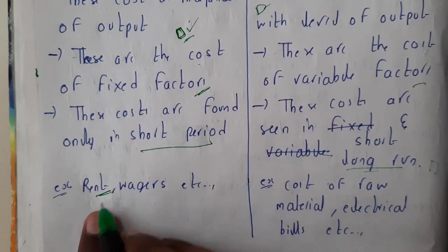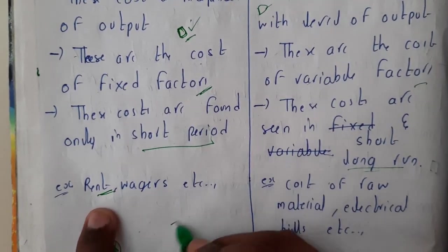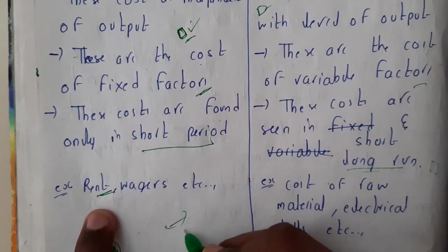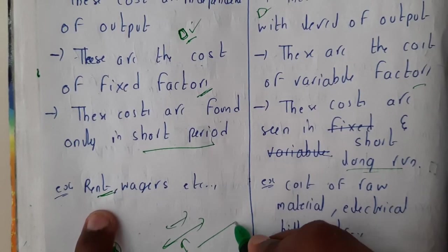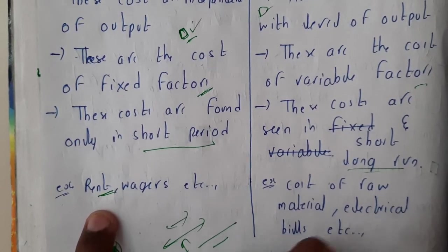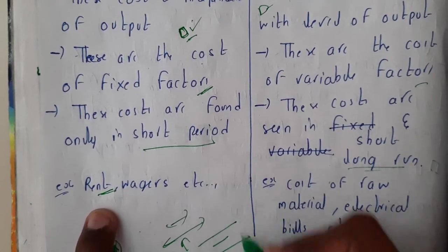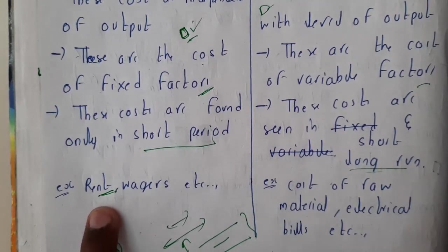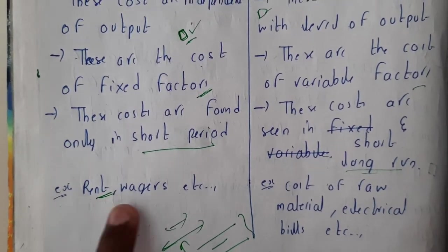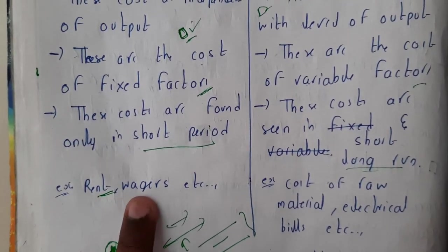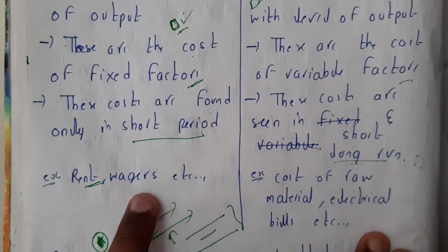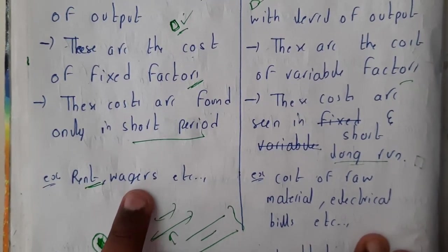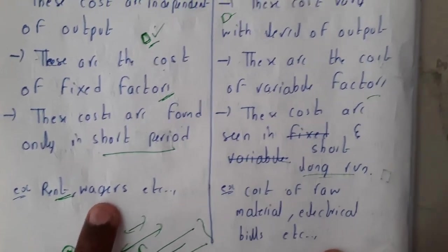The best example for fixed cost will be your rent. Your house rent — you will be having an agreement, so for one year, per month it is only 10,000 or 5,000 or 3,000. You'll be having a fixed agreement, so that is nothing but a fixed cost.